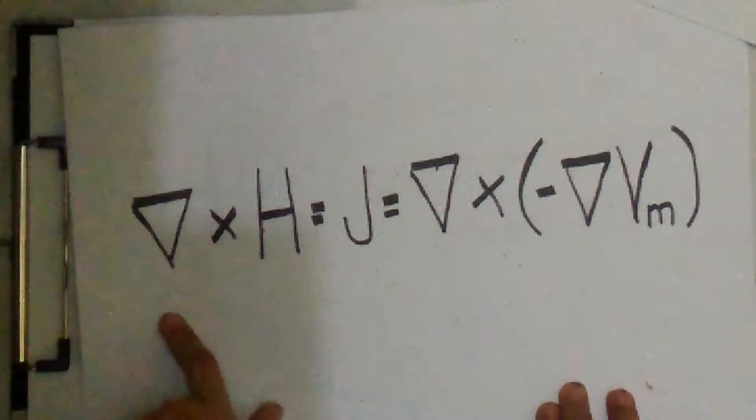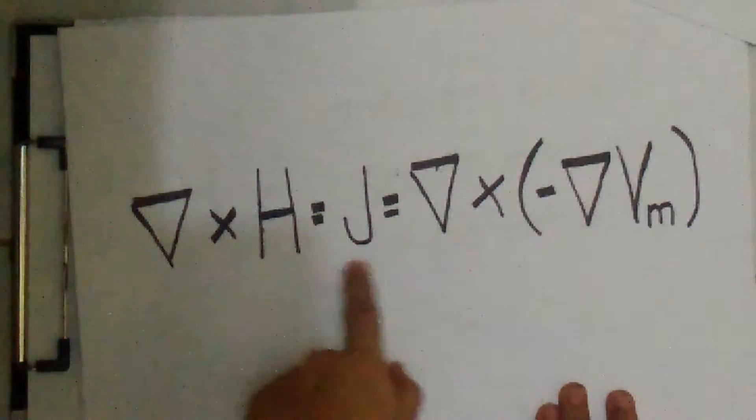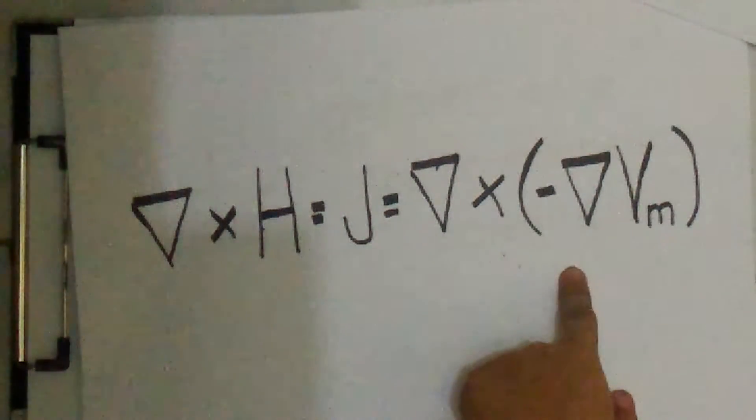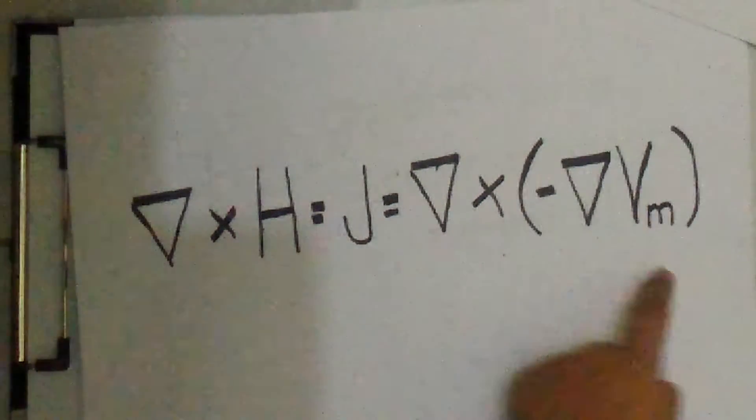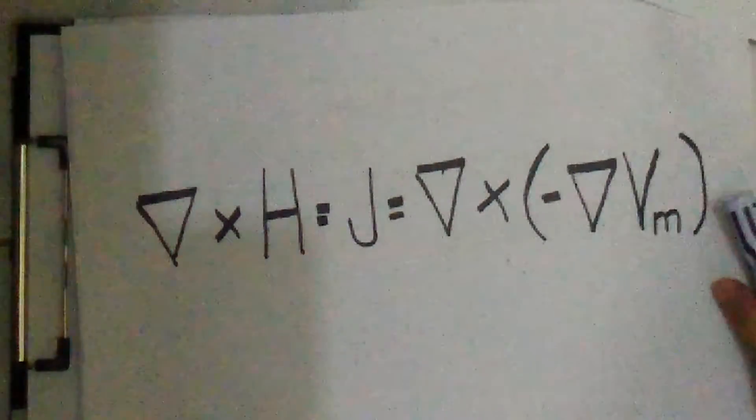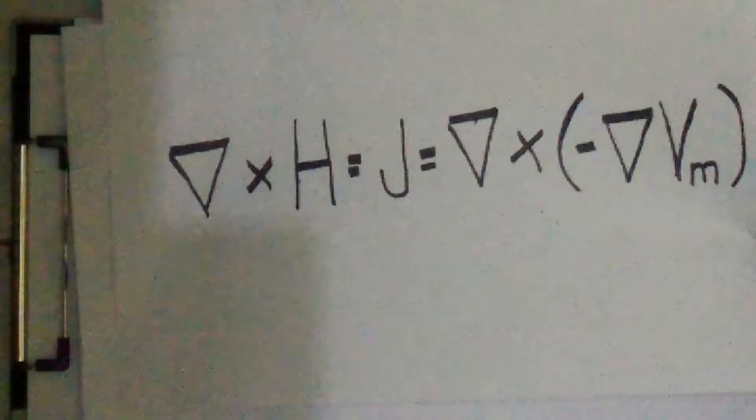Therefore, the gradient cross product of H is equal to J is equal to gradient cross product of negative gradient Vm. And H is defined as the gradient of a scalar magnetic potential.